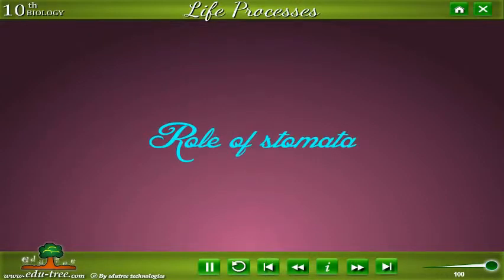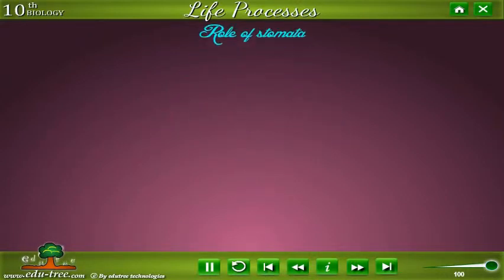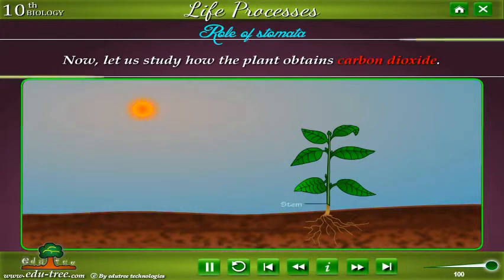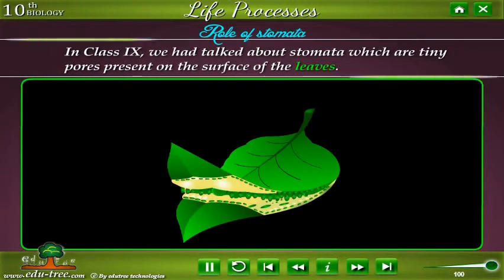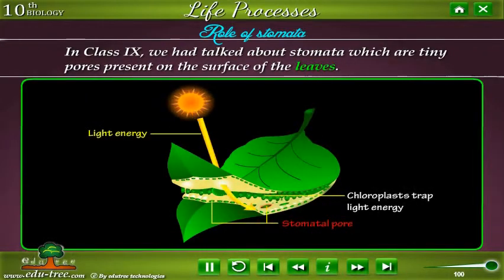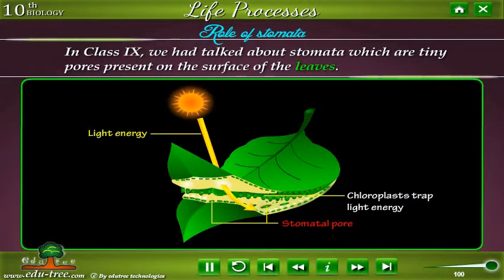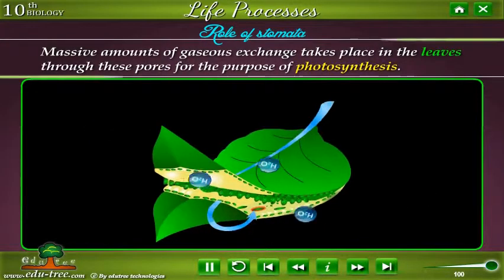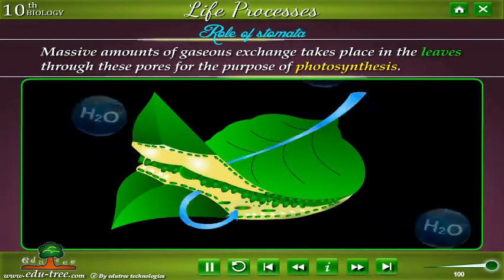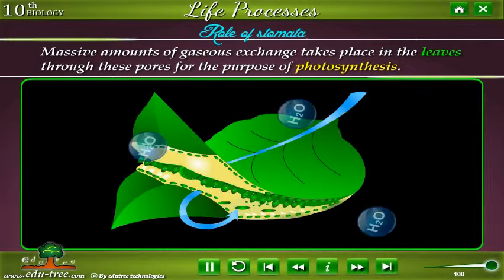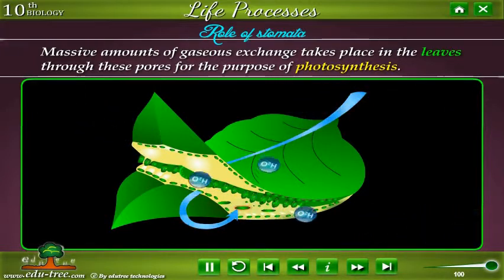Role of stomata: Now, let us study how the plant obtains carbon dioxide. In class 9, we had talked about stomata, which are tiny pores present on the surface of the leaves. Massive amounts of gaseous exchange takes place in the leaves through these pores for the purpose of photosynthesis.